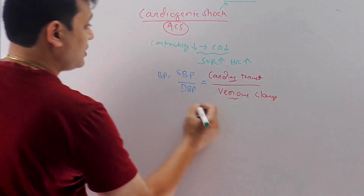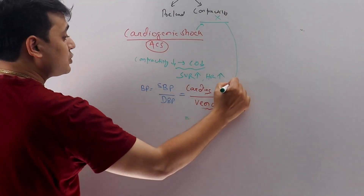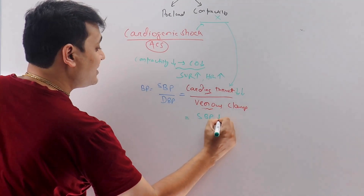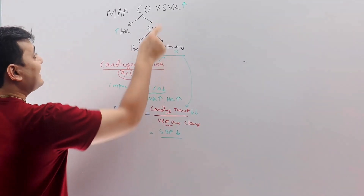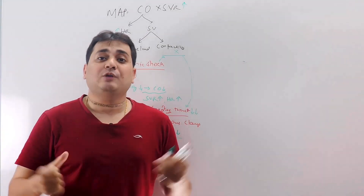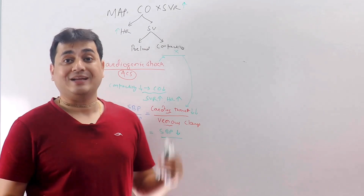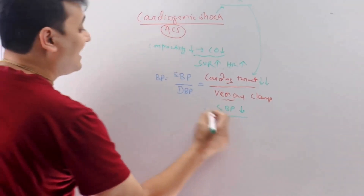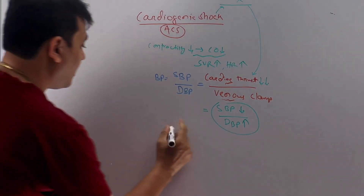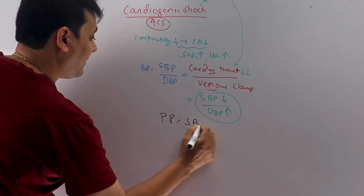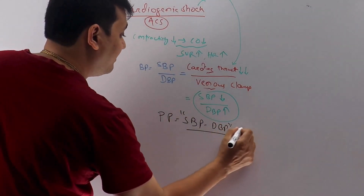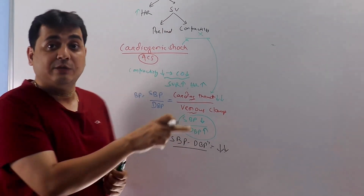In cardiogenic shock, because contractility is compromised, cardiac thrust decreases, so SBP decreases. To compensate, SVR increases — meaning the vasculature becomes very tight or vasoconstricted — so DBP increases tremendously. Pulse pressure equals SBP minus DBP, so as SBP decreases and DBP increases, the pulse pressure narrows significantly.